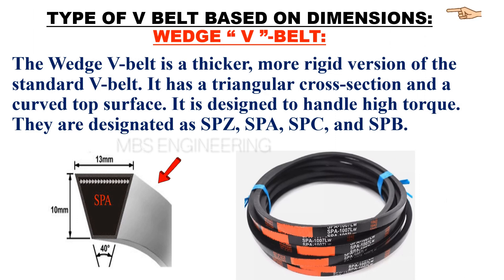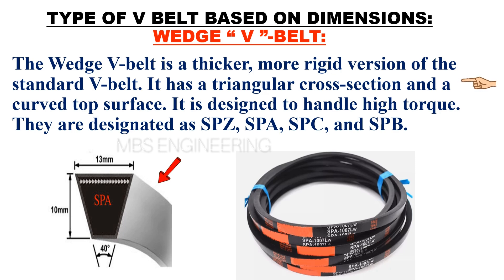We will learn and understand the types of V-belt based on dimensions. The second type is the wedge V-belt. The wedge V-belt is a thicker, more rigid version of the standard V-belt. It has a triangular cross section and a curved top surface. It is designed to handle high torque. They are designated type SPZ, type SPA, type SPC, and type SPB.